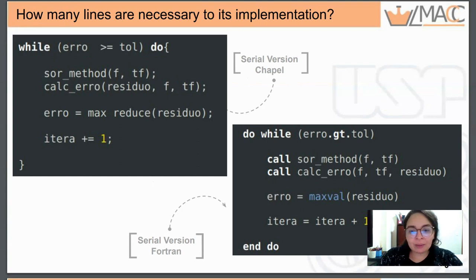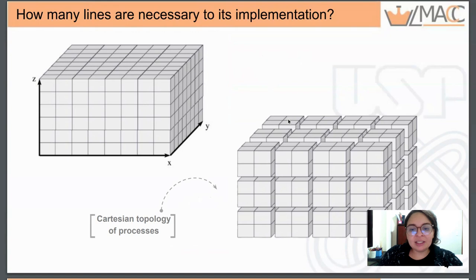The serial implementation in both languages is very similar, but in the parallel case Fortran needs an additional tool. So we needed to break down the domain into subdomains. This breakdown is a Cartesian topology of processes and each subdomain is associated with one process.